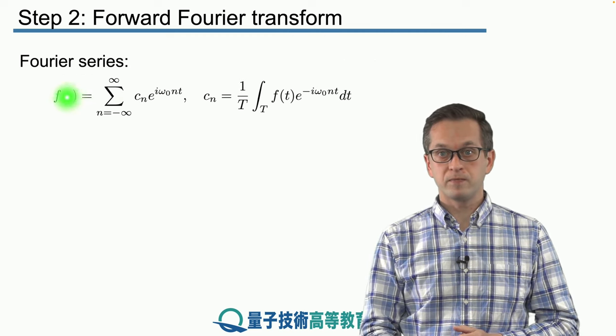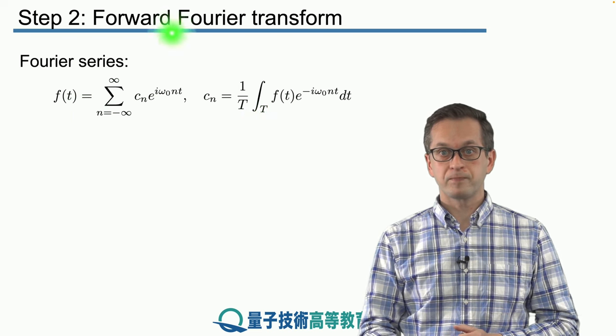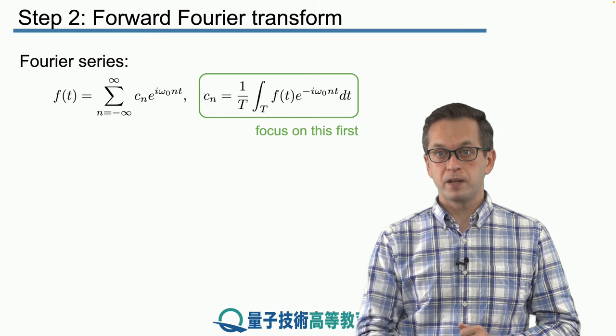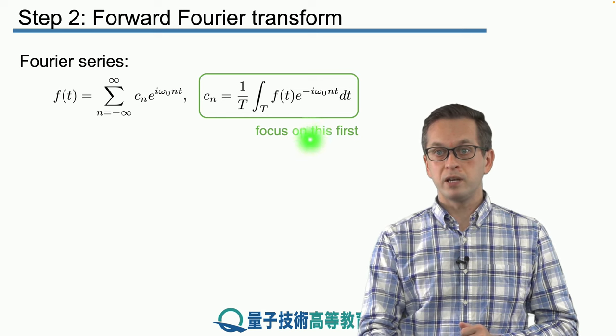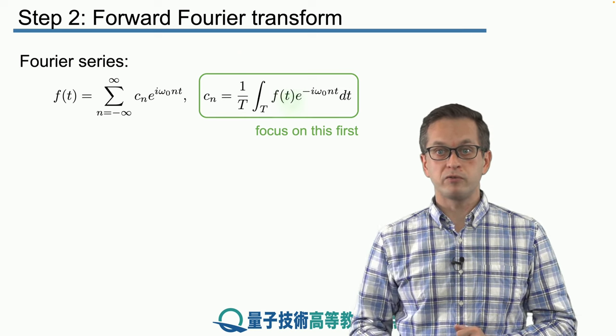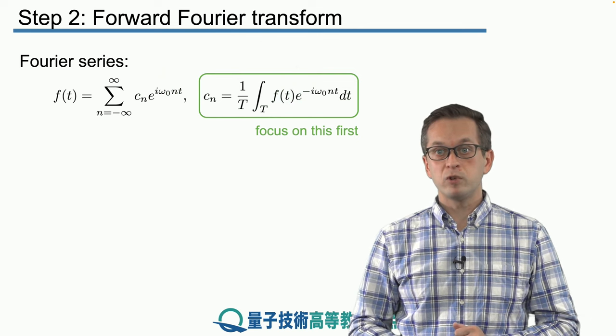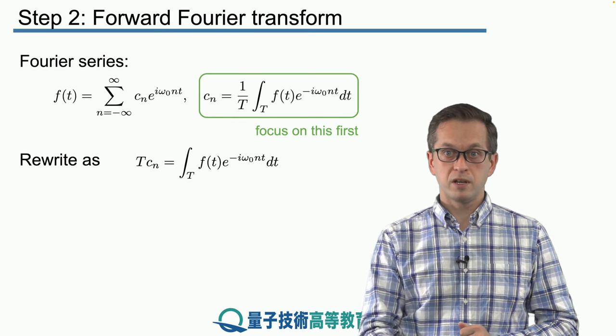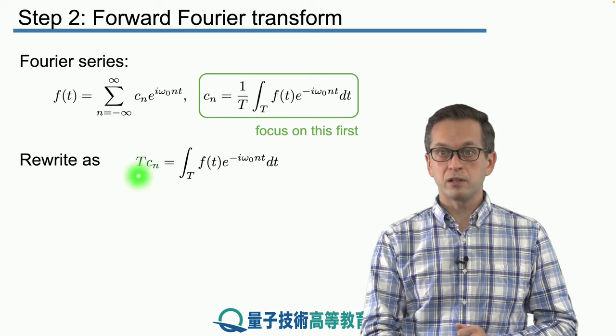This is our complex Fourier series which you all recognize. And we are going to rewrite it in a slightly different way. First, we're going to begin with this side here. So we're going to focus on the complex coefficients themselves. And what we do, we start by multiplying both sides by the period of the function. So here we're not really doing anything magical. All we are doing is we're bringing this capital T on this side.